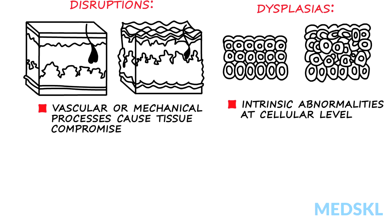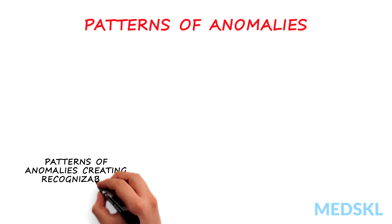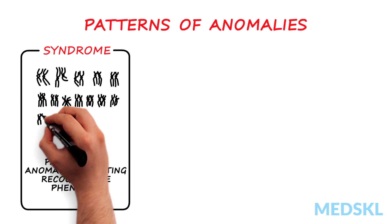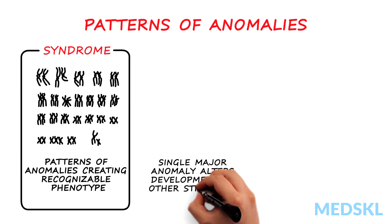Congenital anomalies can often occur together in patterns. Patterns of anomalies that create a recognizable phenotype are known as syndromes. This is often due to a single causative event, such as a chromosome abnormality. When a single major anomaly alters the subsequent development of other structures, this pattern of defects is called a sequence.